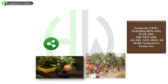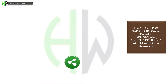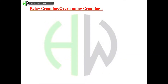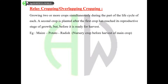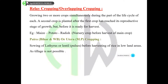Relay cropping, also called overlapping cropping, involves growing two or more crops simultaneously during part of the life cycle of each. A second crop is planted after the first crop has reached its reproductive stage of growth but before it is ready for harvest. Examples of crop sequences include maize followed by radish, or planting a nursery crop before harvest of the main crop.